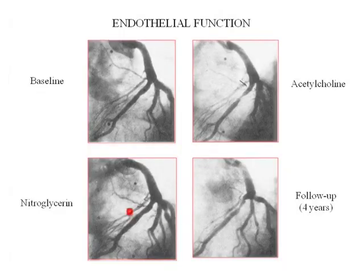So they would inject nitroglycerin into the coronary artery — nitroglycerin is an endothelium-independent vasodilator. As a direct chemical effect, it will vasodilate the artery and the artery will open up. They didn't do anything to this man; they just brought him back four years later and did a diagnostic angiogram without injecting acetylcholine or nitroglycerin. But the angiogram shows progression from a modest narrowing to, four years later, a tight narrowing.